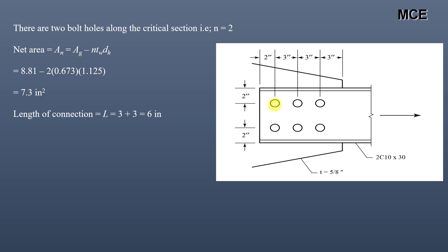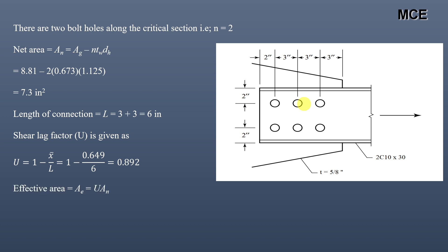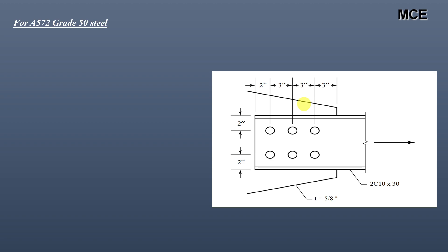Length of connection is measured center to center of the bolt holes: 3 + 3 = 6 inches. The shear lag factor U = 1 − x̄/L = 1 − 0.649/6 = 0.892. Effective area equals shear lag factor times net area: 0.892 × 7.3 = 6.51 in² for one channel section.